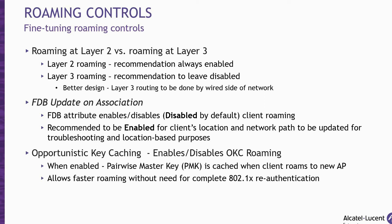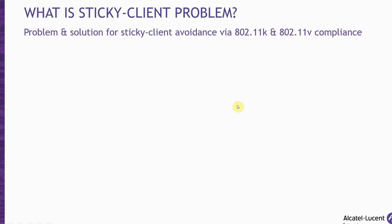If re-authentication happened every time a client roamed, it would defeat the purpose of device mobility while using the wireless environment. The OKC functionality allows for faster roaming of clients without the need for a complete 802.1X authentication. The sticky client issue happens when a Wi-Fi client doesn't roam — those clients tend to hang on to the original access point they associated with rather than moving to a nearby AP that has a much better and stronger signal strength.